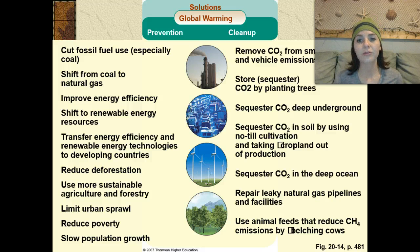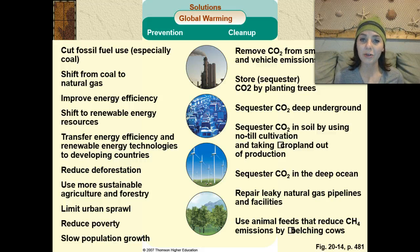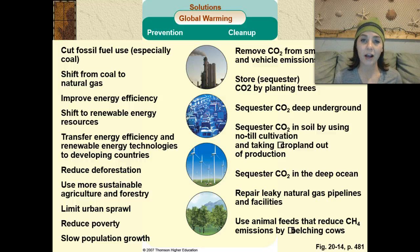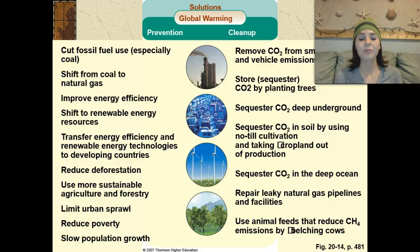As far as cleanup goes, we could remove carbon dioxide from smokestack and vehicle emissions. We could store carbon dioxide by planting trees. We could sequester carbon dioxide deep underground. We could sequester it in soil by using no-till cultivation and taking cropland out of production. We could sequester carbon dioxide in the deep ocean. We could repair leaky natural gas pipelines and facilities. We could also use animal feeds that reduce methane emissions from belching cows.